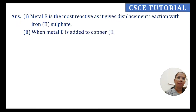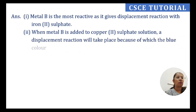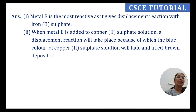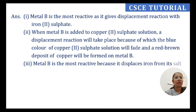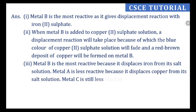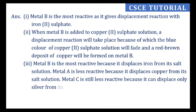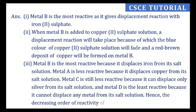If we add metal B to copper sulphate solution, a displacement reaction takes place: the blue colour of copper sulphate solution fades and a red-brown deposit of copper is formed on metal B. Metal A is less reactive as it displaces copper from its salt solution. C is less reactive because it displaces only silver from its salt solution. D is the least reactive because it cannot displace any metal from a salt solution.